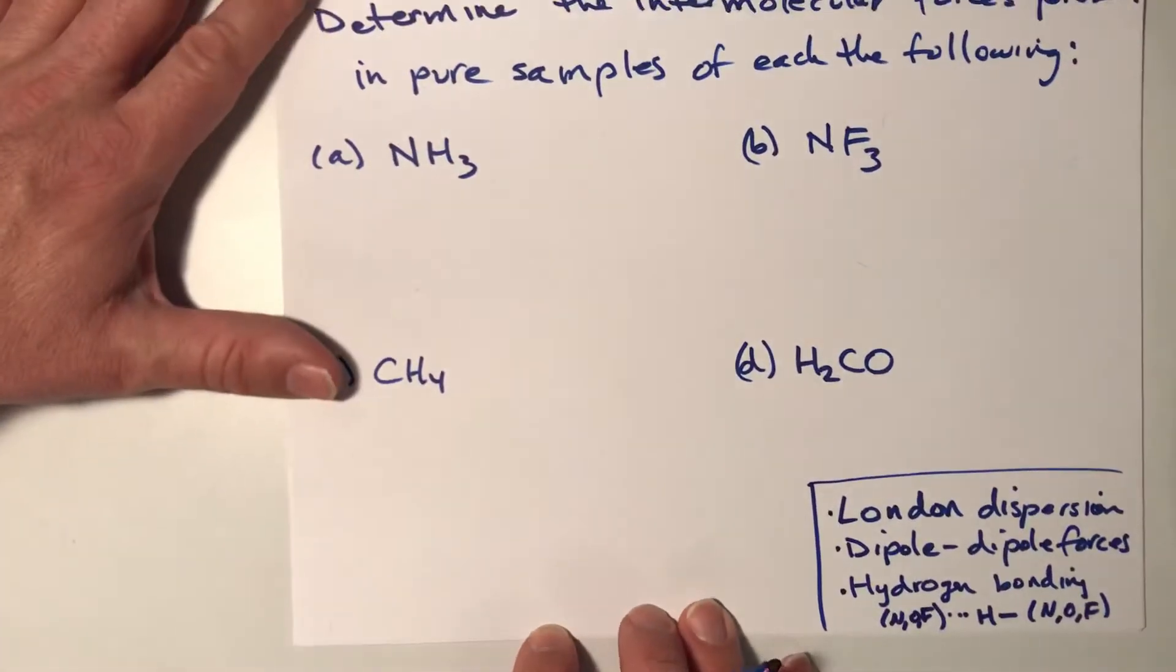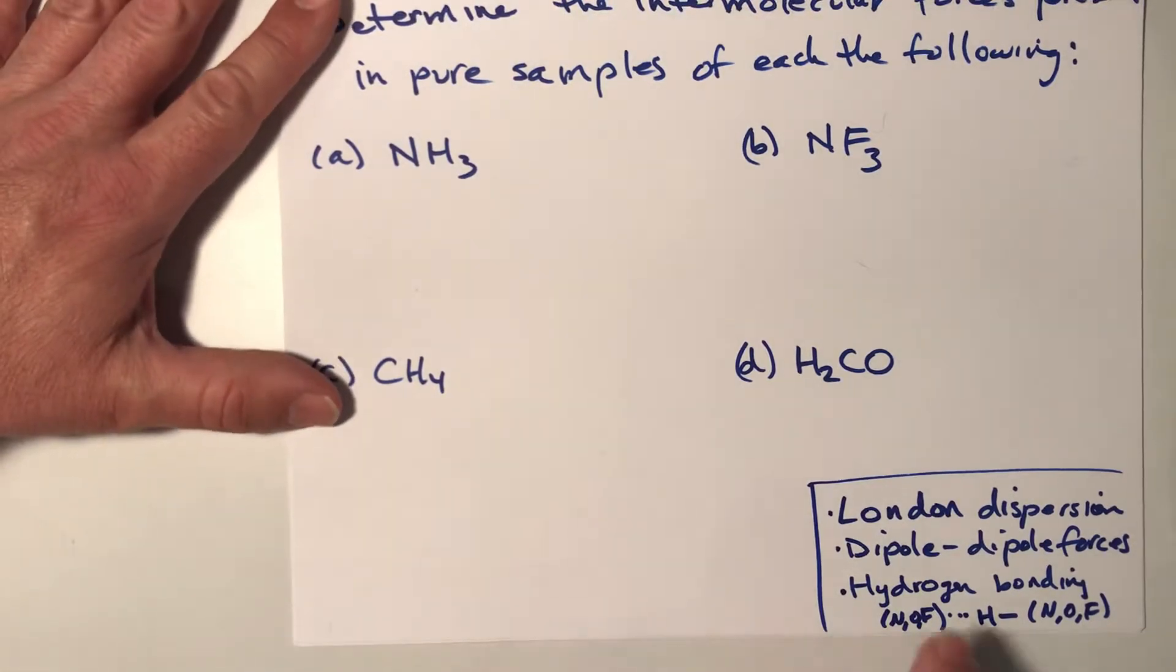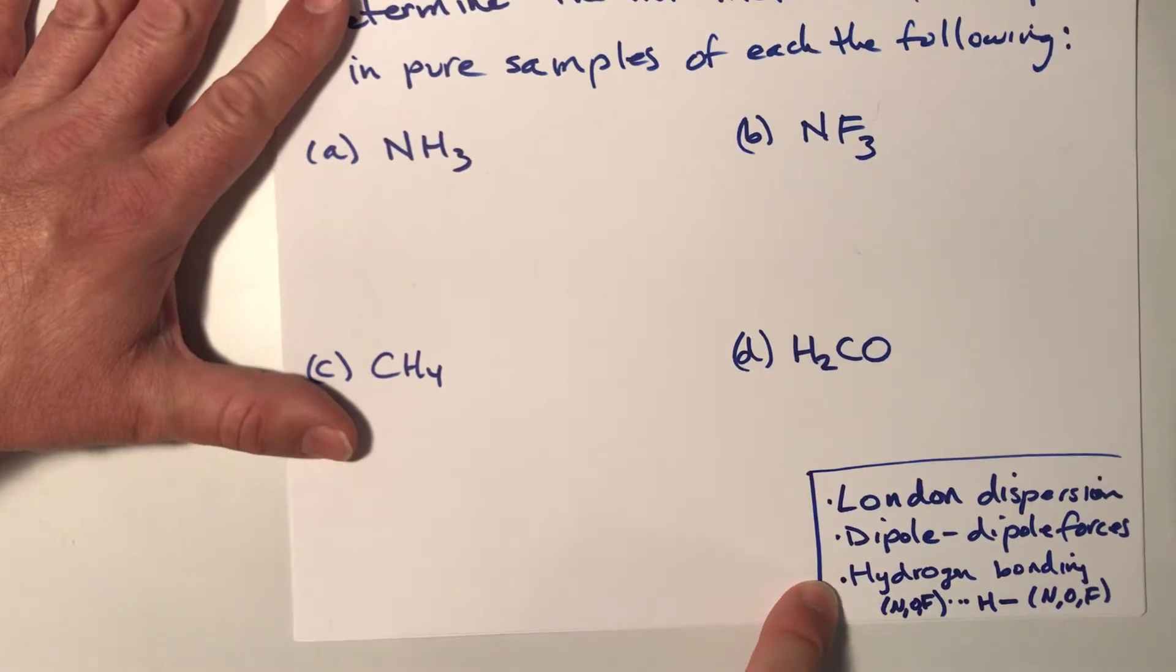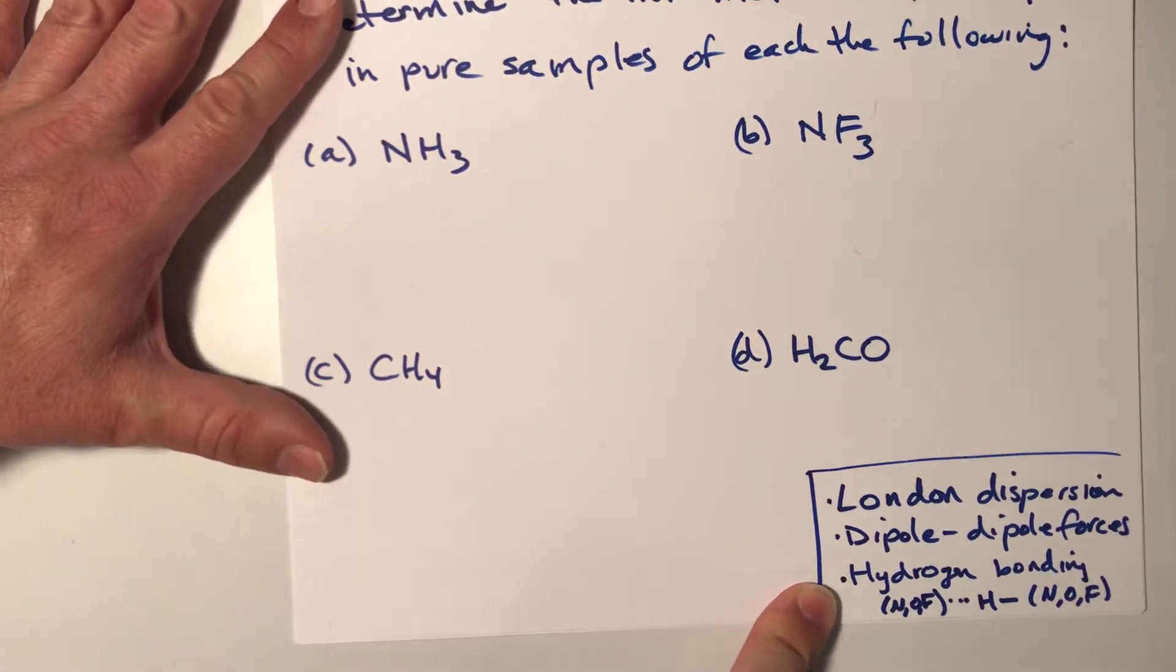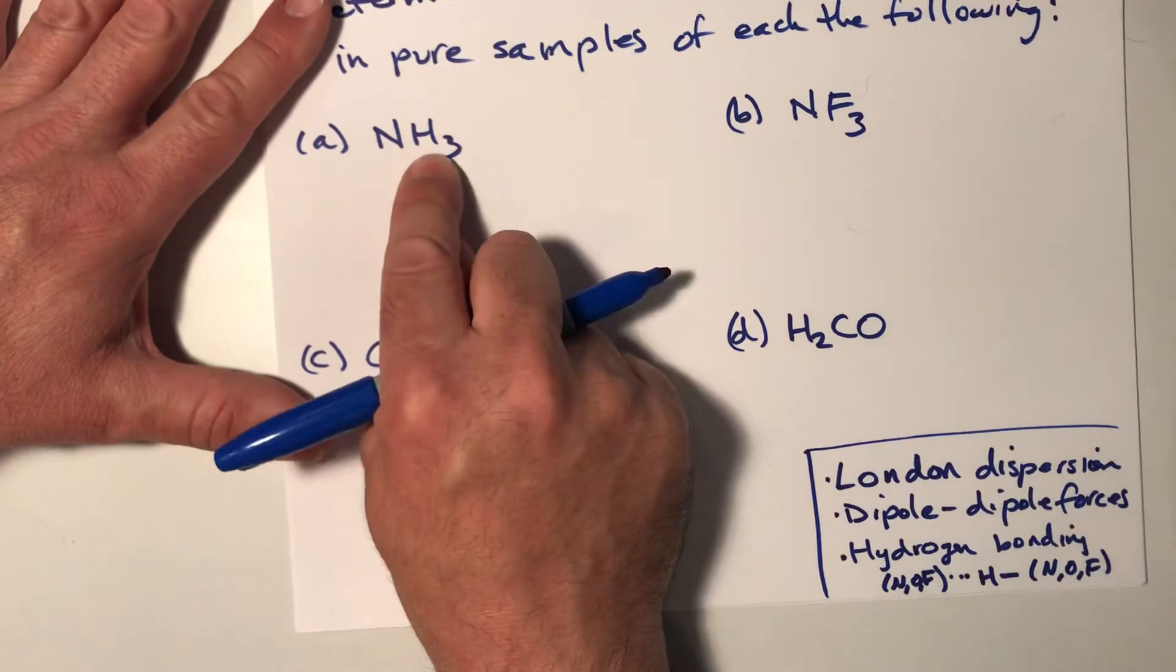Ammonia, off the bat, is going to have, and I should have done these in the reverse order probably, because hydrogen bonding is usually the most important, but we've gone over some examples where that's not always the case, but it's the first one I always look for.